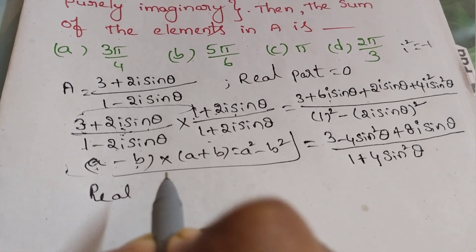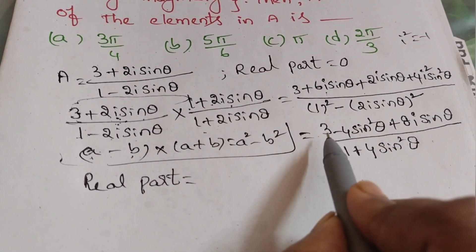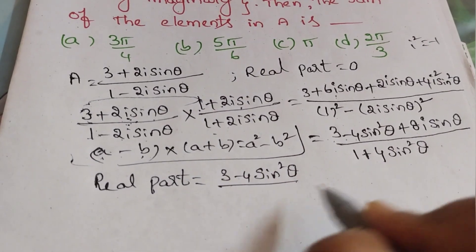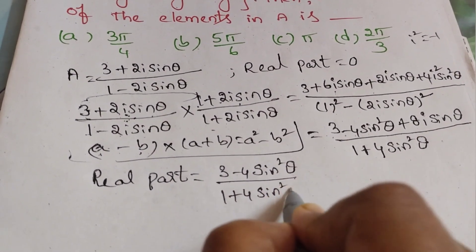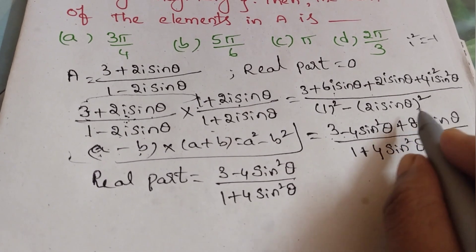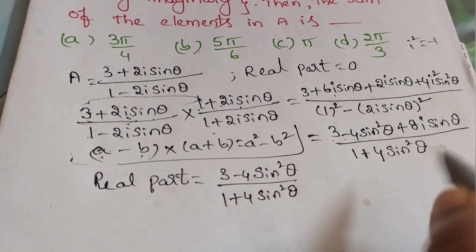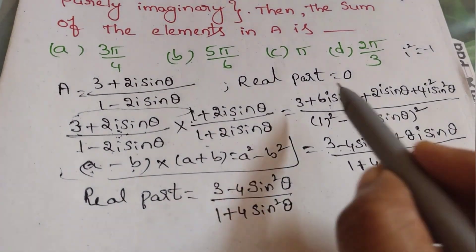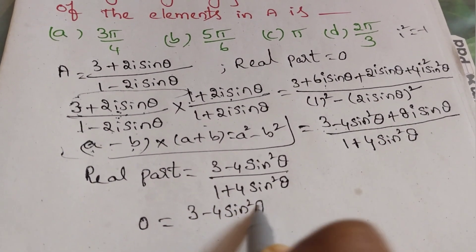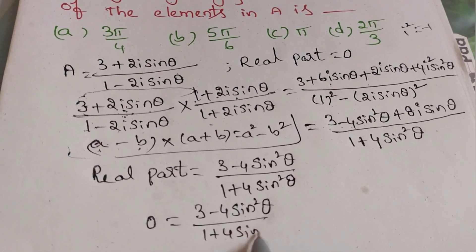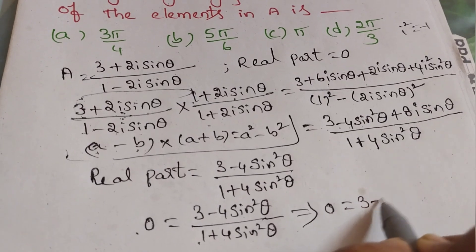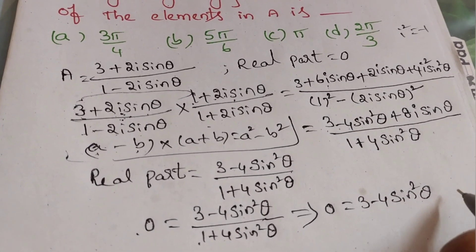Separating real and imaginary parts: the real part is (3 minus 4 sin-squared theta) divided by (1 plus 4 sin-squared theta). Since the expression is purely imaginary, the condition is real part equals zero. So: (3 minus 4 sin-squared theta) divided by (1 plus 4 sin-squared theta) equals 0. Cross multiplying gives 3 minus 4 sin-squared theta equals 0.